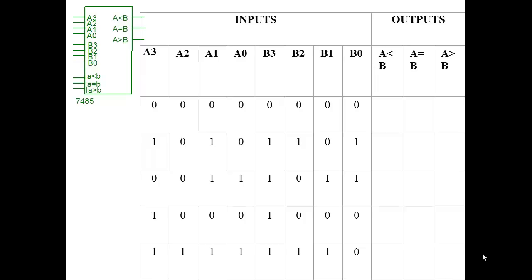This is the 7485 — it could be a 74LS85. You have two different sets of inputs for your numbers: A0, A1, A2, A3 and B0, B1, B2, B3. These are binary numbers weighted as 1, 2, 4, and 8, just like in binary. There are also inputs for A less than B, A equal to B, and A greater than B — those are for cascading another chip. Then you have the outputs: A less than B, A equals B, and A greater than B.